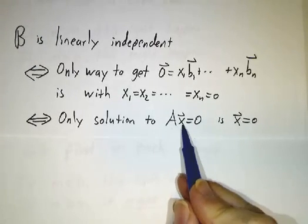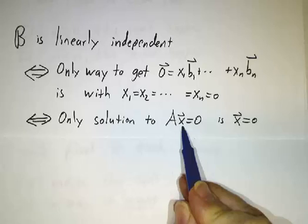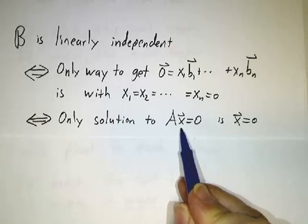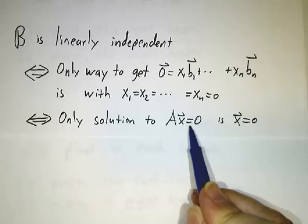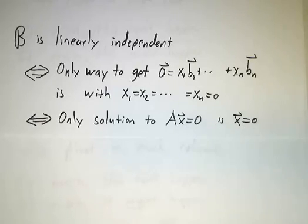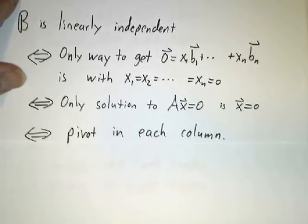But Ax is a linear combination of the columns with coefficients being x1 through xn. So that's another way to say that the only solution to Ax equals 0 is x equals 0. And we've gone over the theory of how do you find all the solutions to Ax equals 0. You row reduce.